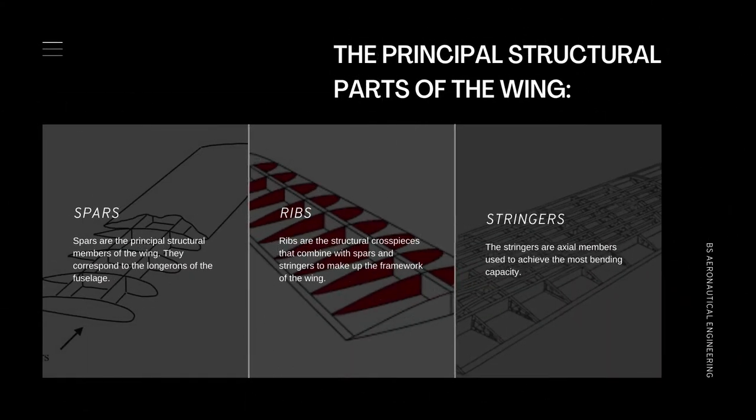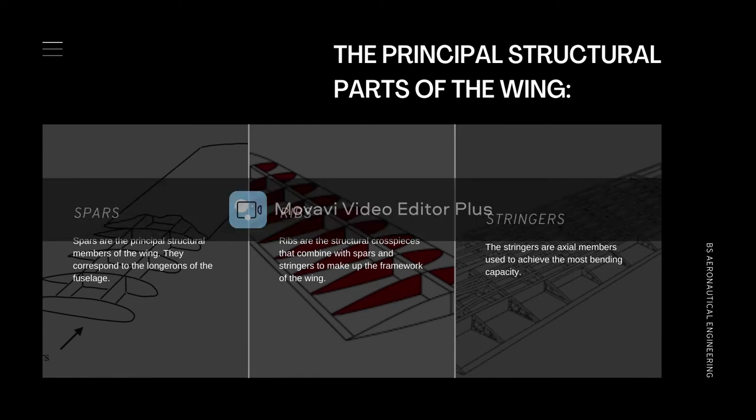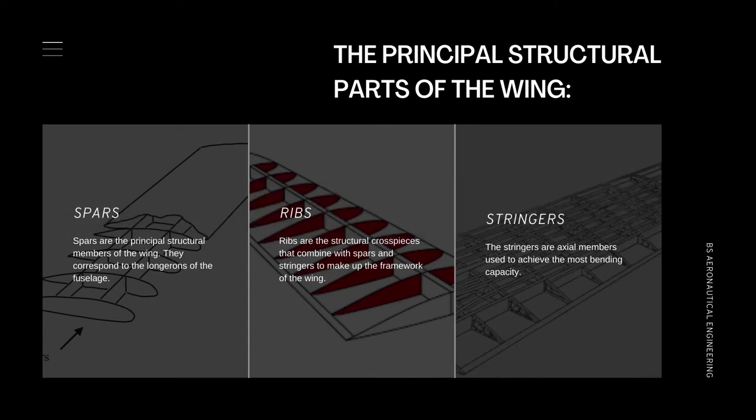The internal structure of most wings is made up of spars, stringers running spanwise, ribs, and formers or bulkheads running chordwise, leading edge, and trailing edge. First, the spars. Spars are the principal structural members of the wings. They correspond to the longerons of the fuselage.